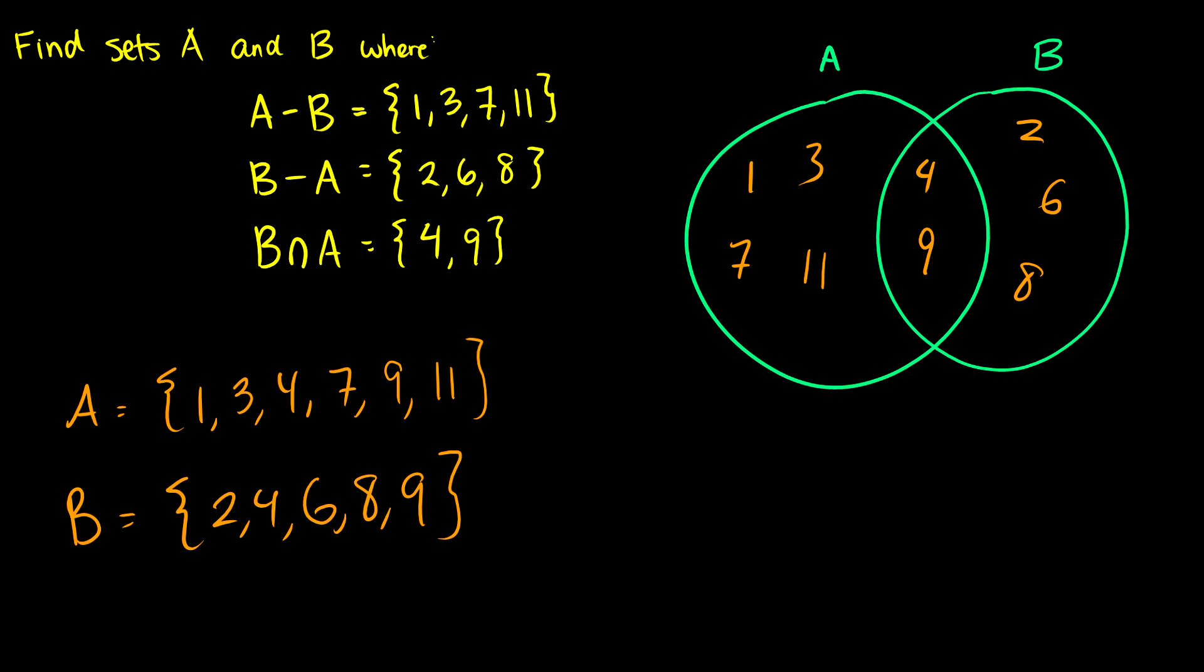So the question is, how do you do this without Venn diagrams? Well, you know that B intersection A is 4 and 9. So 4 and 9 have to be in both sets. And we have these B minus A. So that means that B minus A, 2, 6, and 8, those have to be in just B. So we put those in B. And then we end up with this 2, 4, 6, 8, 9. Then we take a look at A minus B, and we see 1, 3, 7, and 11. So these four numbers must be in A. So we put those in A, and we end up with this result.